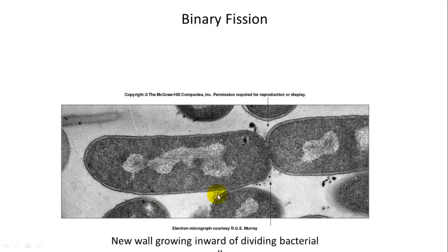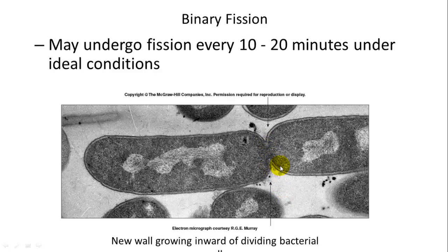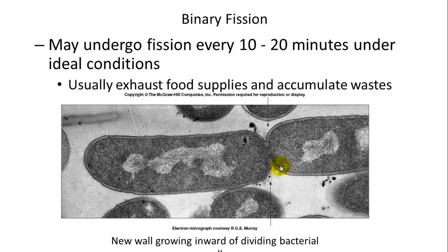Here's an example of two bacteria that have already duplicated the chromosome and are now forming a septation — a wall dividing the two new bacteria. They can undergo fission every 10 to 20 minutes under ideal conditions of temperature, pH, and nutrients. However, they usually exhaust their food supplies and accumulate waste, giving them an exponential growth rate until nutrients run out.